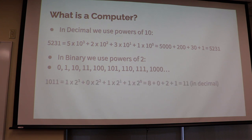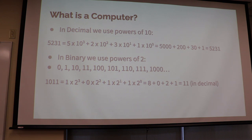So what you're doing is actually multiplying by powers of two. This is how binary works. For instance, the number 1011 in binary represents one times two to the third, which is eight. Zero times two squared, which is four. One times two to the first, which is two. And one times two to the zero, which is one — which is eight plus zero plus two plus one. So in decimal, that's actually equivalent to eleven.